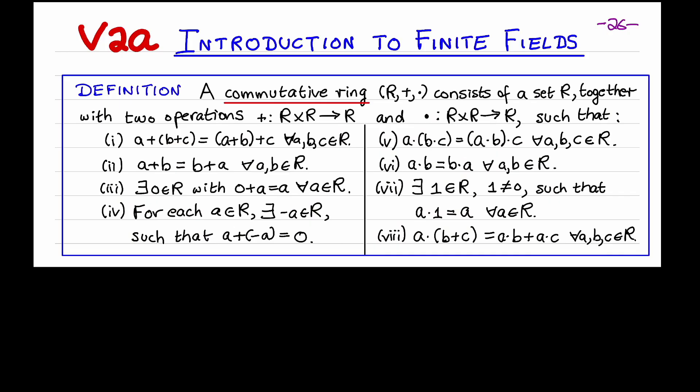Let me begin by defining the notion of a commutative ring. The definition is a bit tedious, and the details aren't really important for this course, so I'll go over the definition rather quickly. But keep in mind that a commutative ring is meant to abstract the essential properties of the integers, an object you're very familiar with.